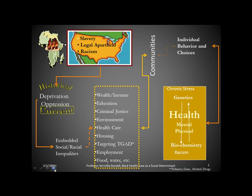We start off with Africans being taken as slaves and brought to this country, and that's a very important point in our discussion about the health of Black Americans and the slave health deficit that exists. It's important because we have to acknowledge that Africans did not arrive in this country healthy as a group — in fact, exactly the opposite occurred. They arrived unhealthy, which is essentially why enslaved Africans were taken to the Caribbean before being brought to the United States, because you cannot put unhealthy product on the market and expect it to fetch a good price.